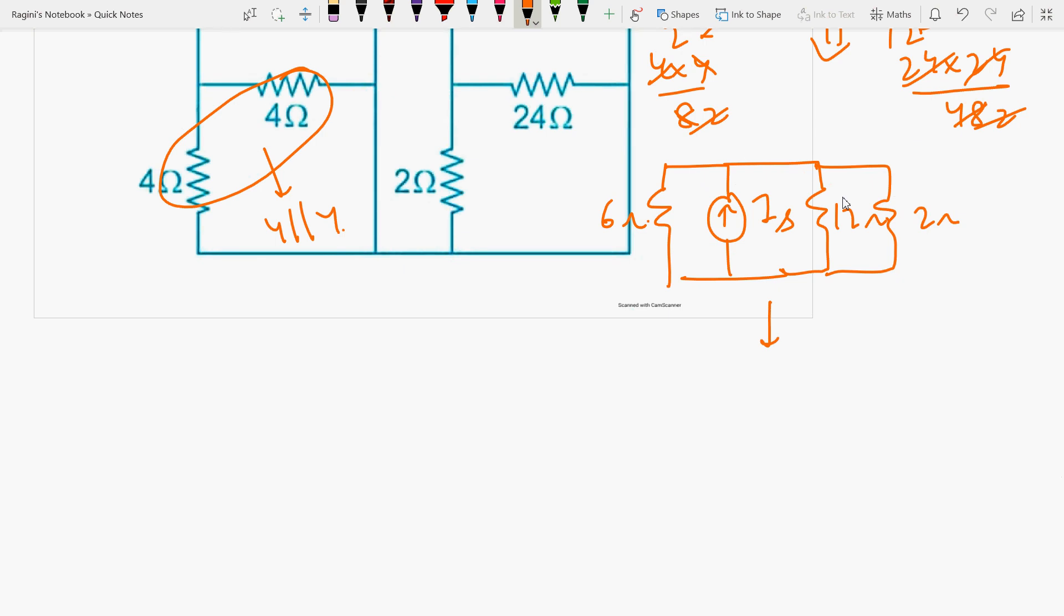Here you can see, here is 6 ohms and here is 2 ohms, and here is 6 into 12 by 6 plus 12, which equals 18.